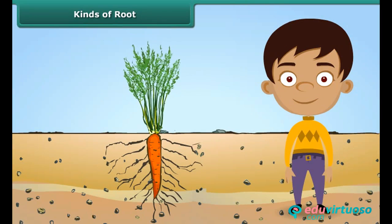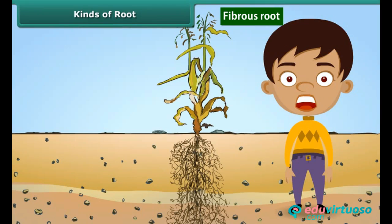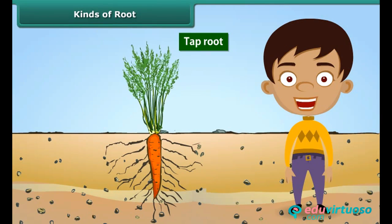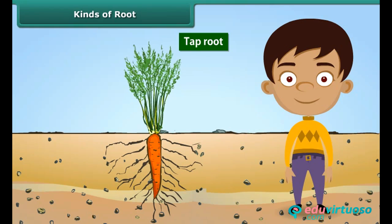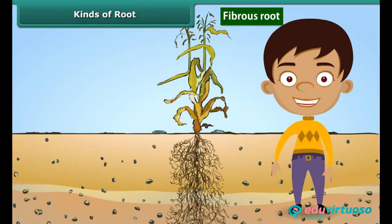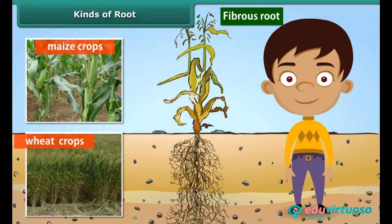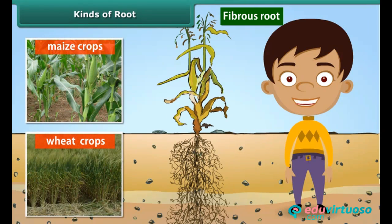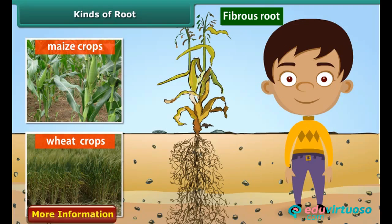Roots are of two types: tap roots and fibrous roots. A tap root is a single large root that grows straight down deep into the soil. Small roots that branch from it are called lateral roots — for example, roots found in radish and carrot plants. Fibrous roots are a cluster of fine roots that spread into the soil, with no main root — for example, roots found in maize and wheat crops.